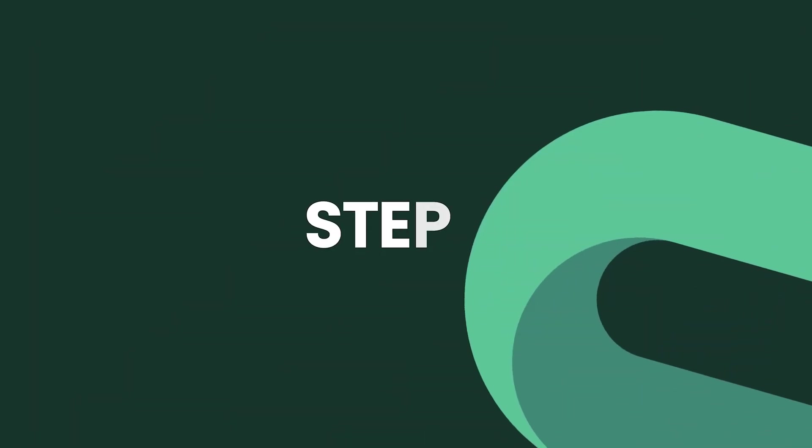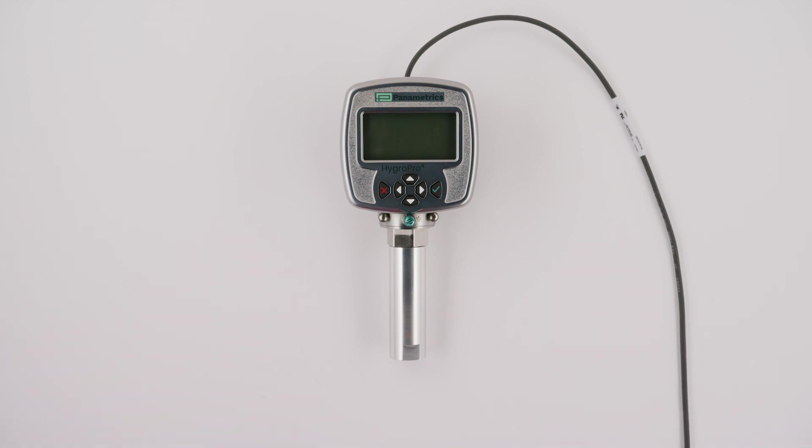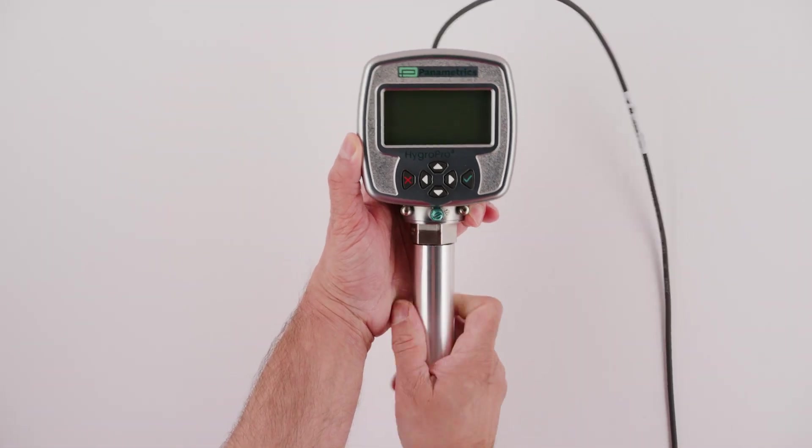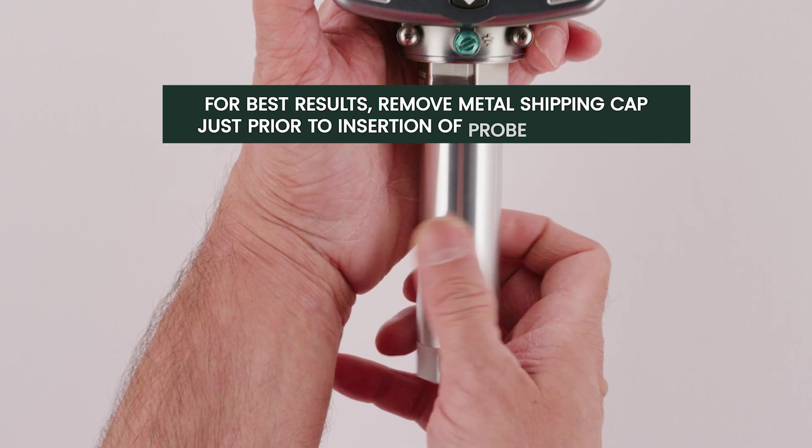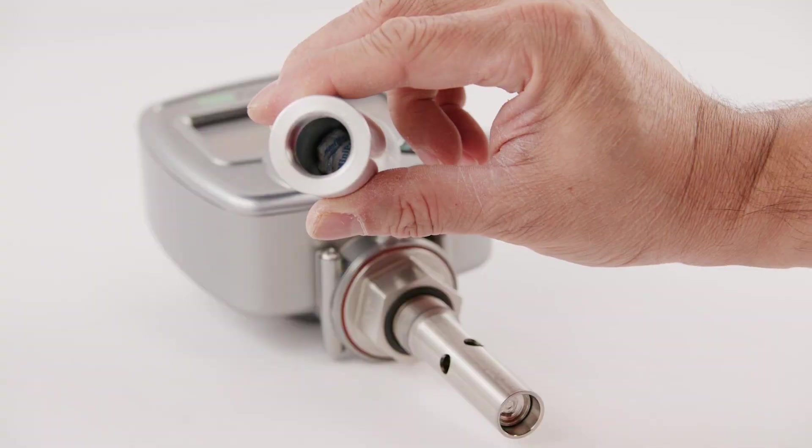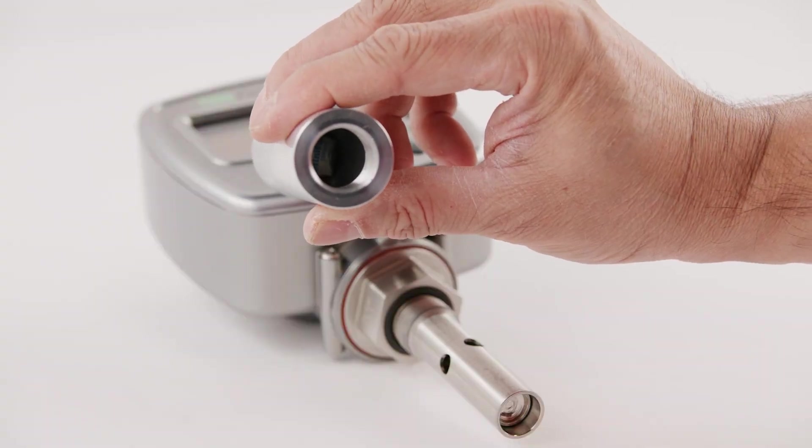Step 2: Just prior to installation on the process, gently unscrew the aluminum desiccant cap from the bottom of the probe to expose the shielded aluminum oxide moisture sensor to the process gas. Discard the desiccant packs enclosed in the cap.